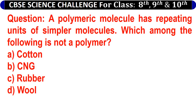Question: a polymeric molecule has repeating units of simpler molecules. Which among the following is not a polymer? A) cotton, B) CNG, C) rubber, D) wool.